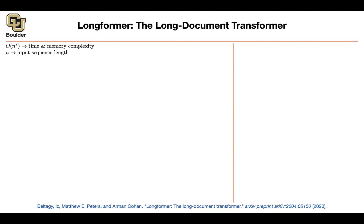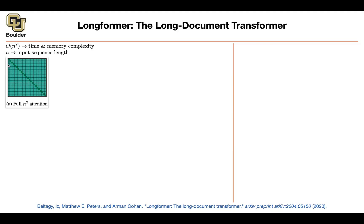Here n is the sequence length. The longer your sequence, the higher the cost of computing the attention matrix, and then multiplying and storing it. This is a schematic view of the full attention — every query is going to pay attention to every single key in the input. So everybody is paying attention to everybody else, and that gives you order n squared in time and memory complexity.